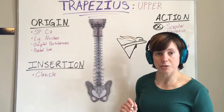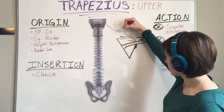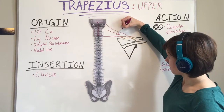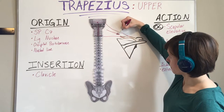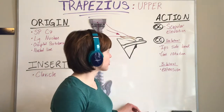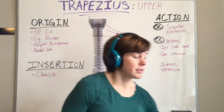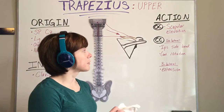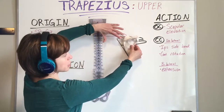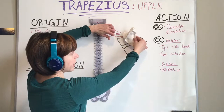The insertion of the upper trapezius will come down and insert on the clavicle. The actions of the upper trapezius include open chain actions of scapular elevation, so when the muscle contracts the scapula will elevate.